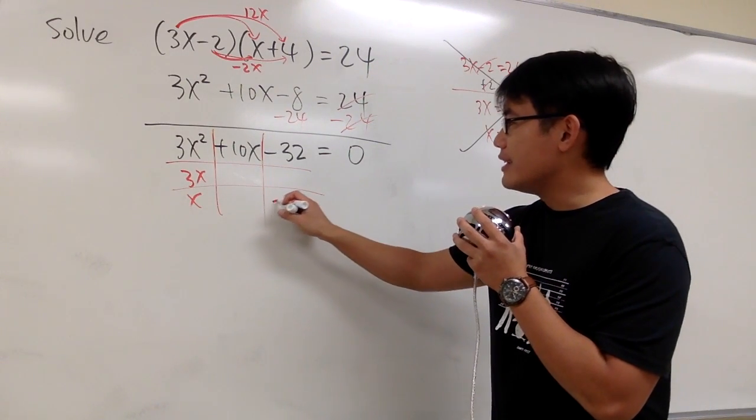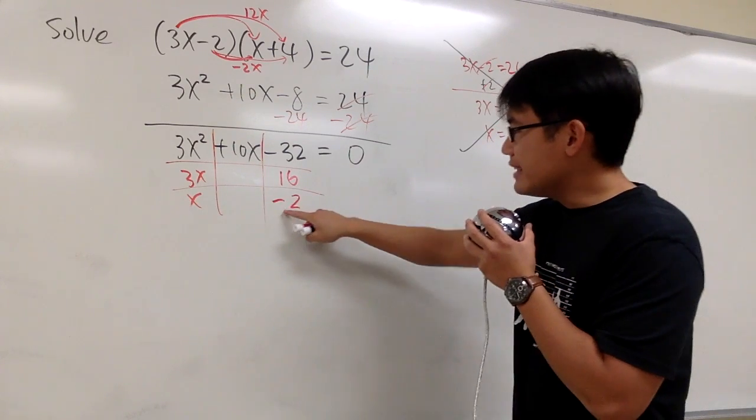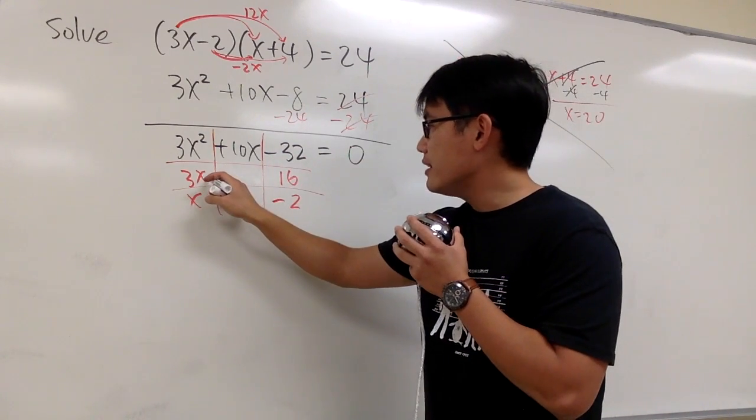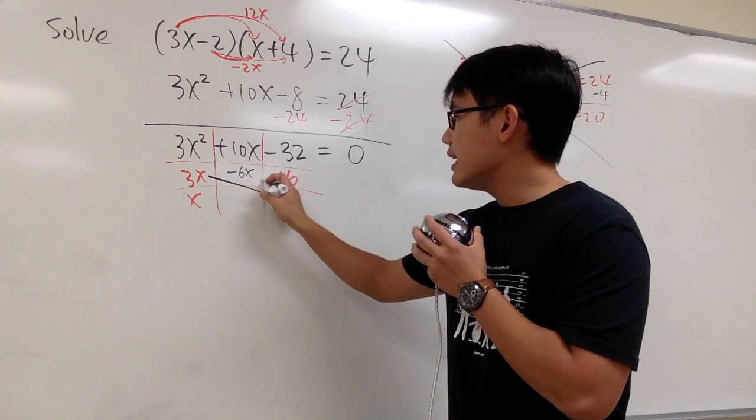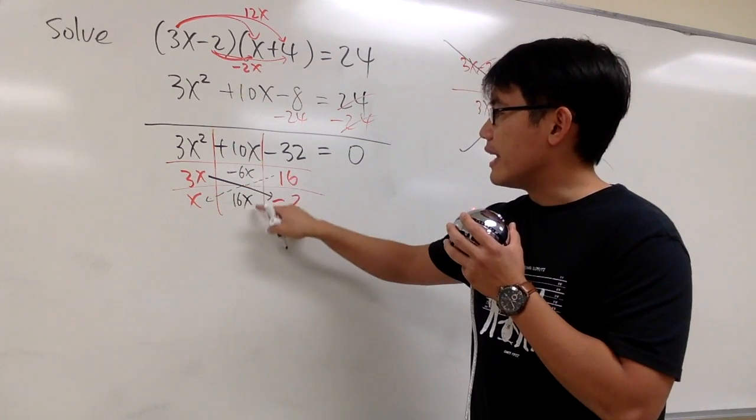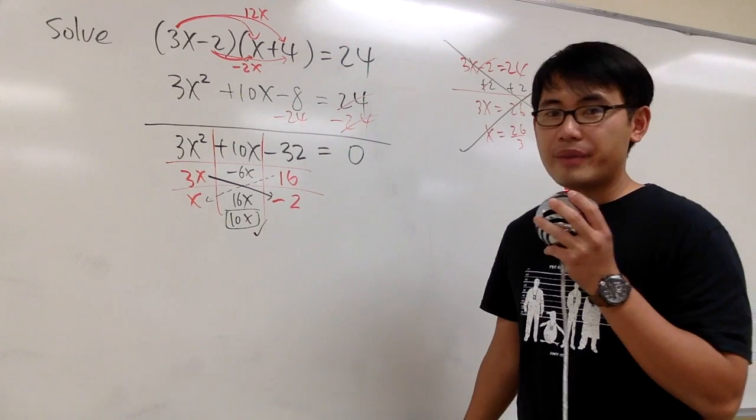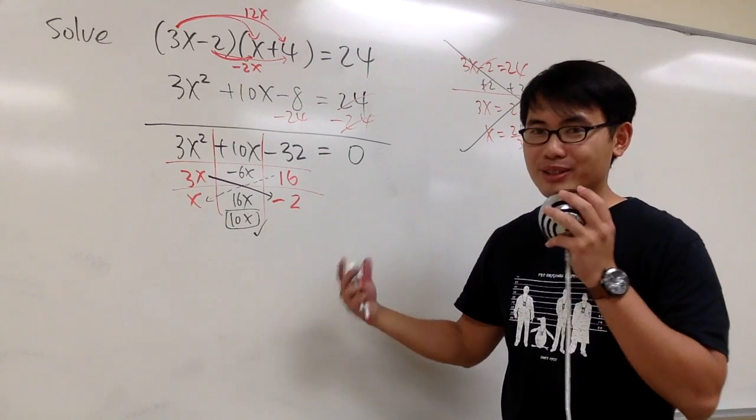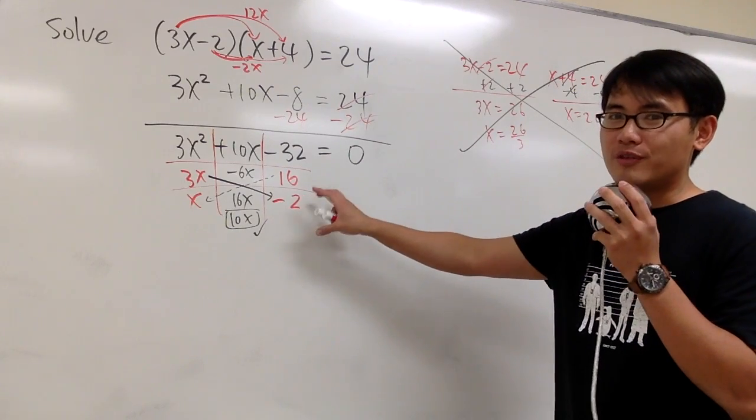In our case, we are going to use negative 2 right here and positive 16 right here. Negative 2 times positive 16 will give us negative 32. And we see that if I take this 3x, multiply with negative 2, we end up with negative 6x. And then 16 times x, that's 16x. Together, we do end up with the 10x that we want. So this is the correct combination. If you try factoring yourself and you didn't get it right, then that means we have to try another combination.